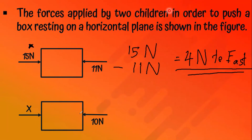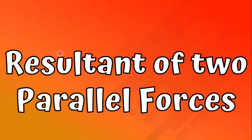If an object remains in equilibrium and one force is 10 Newtons, what is the value of X? Since the object is in equilibrium, both sides must be equal, so X = 10 Newtons.